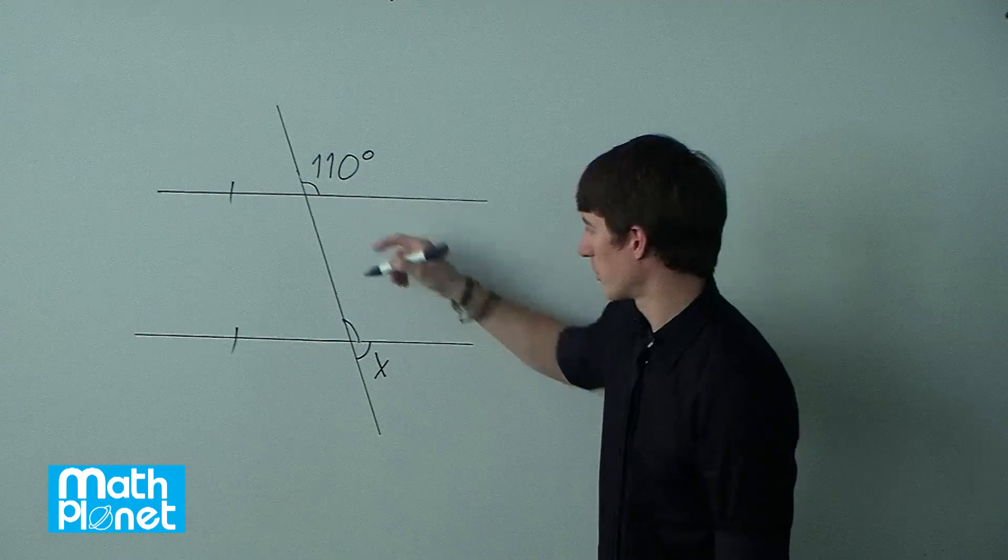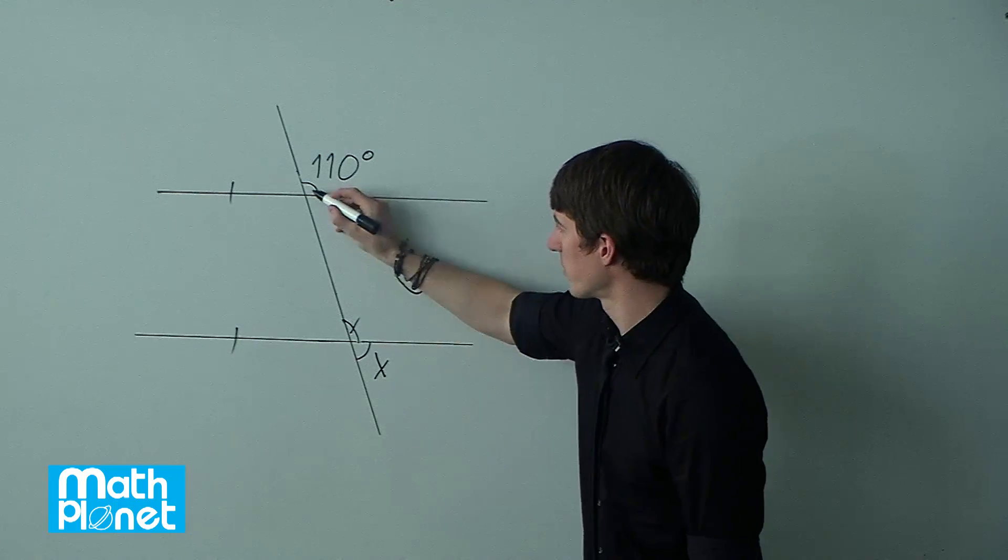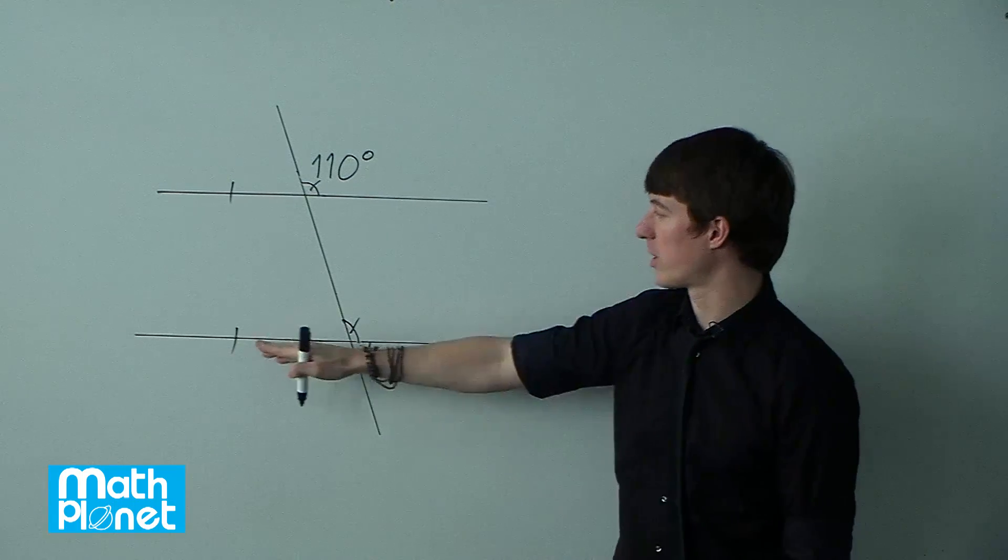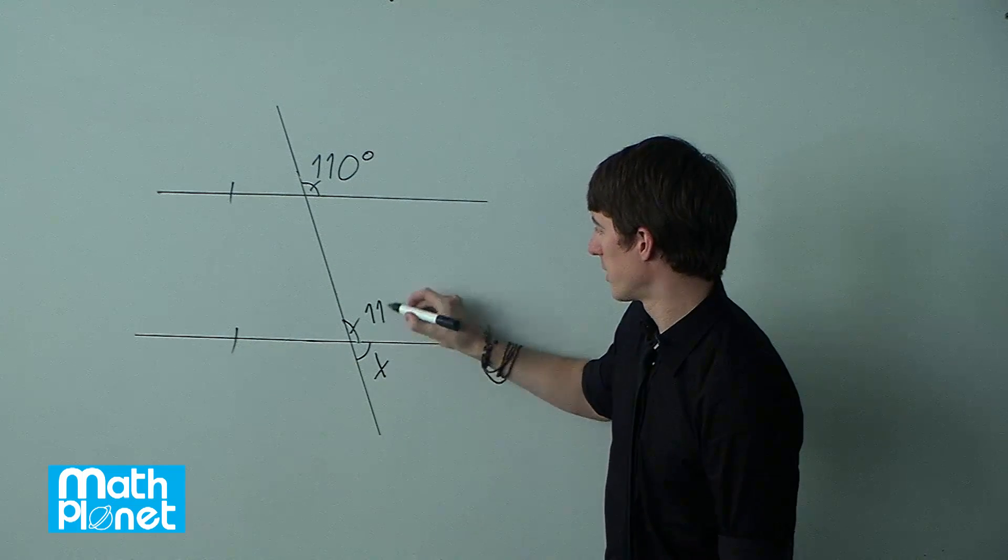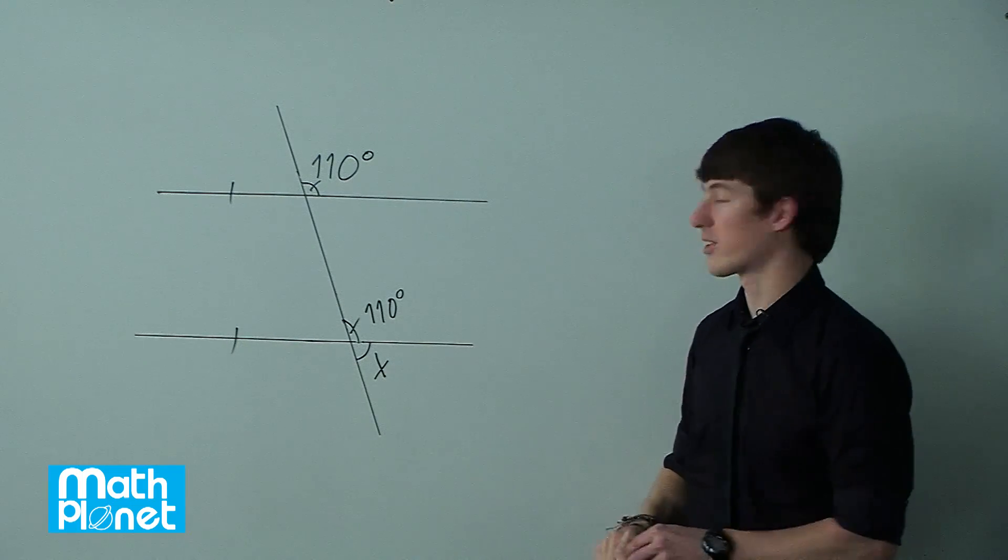So I'll just denote that by a similar arc, and I'll say, we'll give these tick marks to say that they're the same, in the same way that we say these are parallel. So this is 110 degrees as well. So that's the first thing that we need to do.